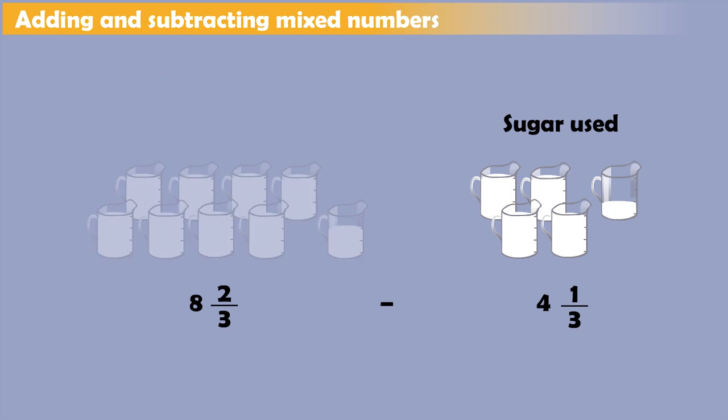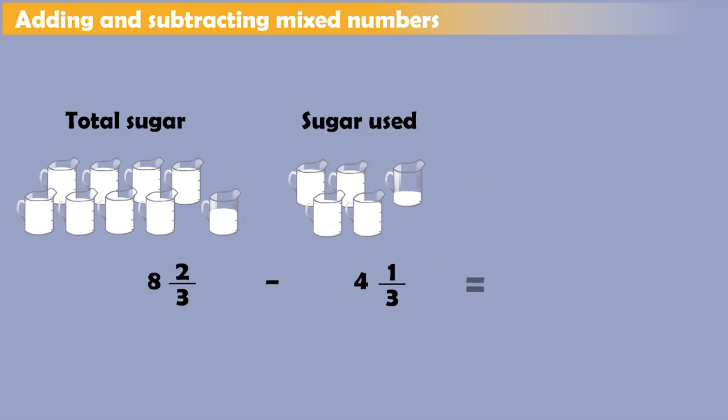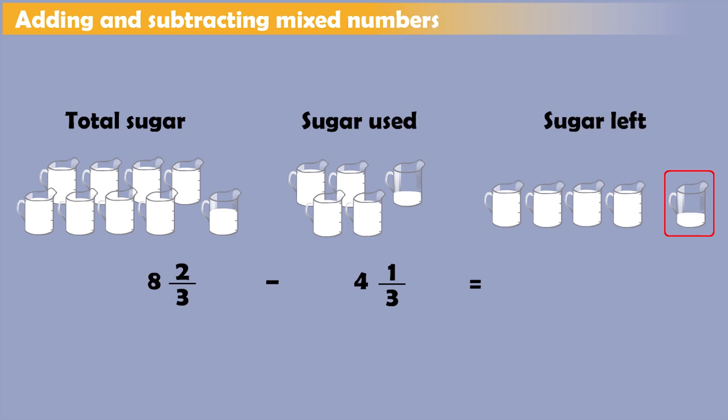Here are 8 and 2 3rds cups, the sugar that was in the pot. And here are 4 and 1 3rds cups, the sugar Sarah and Lily used. We take away 4 cups from the 8, like that. And we take 1 3rd from the 2 3rds here, like that. And what remains is the answer.